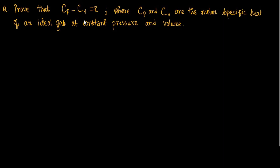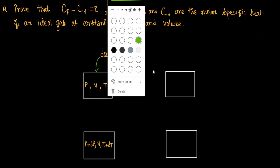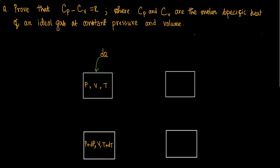We can represent this in a diagram. Consider an ideal gas of initial pressure P, volume V, and absolute temperature T. This ideal gas absorbs heat energy dQ. The pressure increases to P plus dP, volume remains constant, and absolute temperature increases to T plus dT. This process occurs at constant volume.